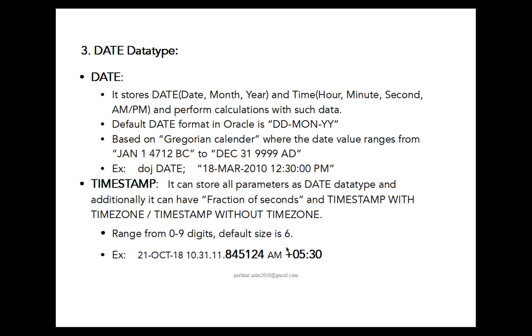Such type of output like 21st of October 2018, 10 hours, 31 minutes, 11 seconds, and this 845124 is the fraction of seconds or milliseconds. AM is the part of date, and this +05:30 is the timestamp, it's the time zone, time zone of Asia/Kolkata, India. Means only DATE can contain 21st October 2018, hour, minute, second, and meridian indicator, but TIMESTAMP can have additionally this fraction of seconds and time zone part.